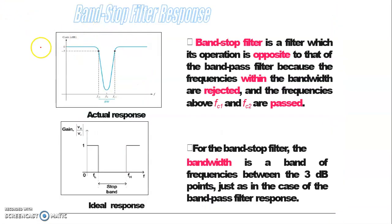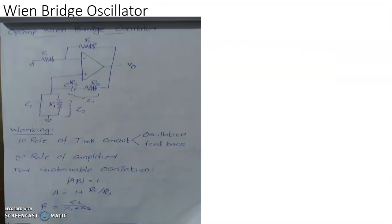This kind of filter is referred to as a notch filter. A band stop filter operates opposite to a bandpass filter — frequencies within the bandwidth are rejected and frequencies above fc1 and fc2 are allowed to pass. The bandwidth of a band stop filter is the band of frequency between the 3 dB points, just as in the case of bandpass filters. Since the purpose is to reject a particular band, the bandwidth of the stop band is the key parameter.